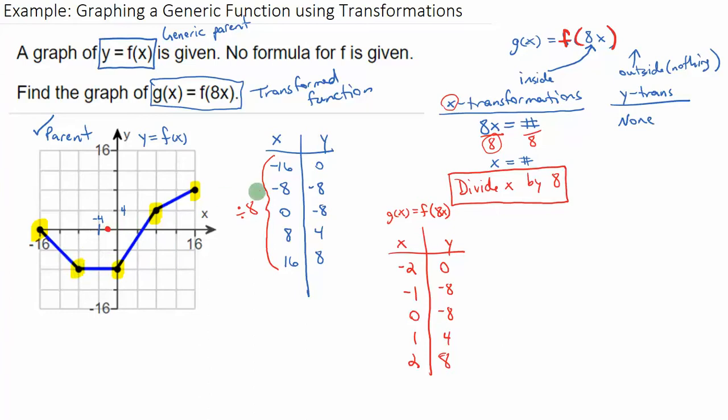This point down here, which was (-8, -8), becomes (-1, -8). So now that's down here. This point (0, -8), this guy right here stays at (0, -8). It doesn't change, so it's still right where it was. The point (8, 4), this guy over here, becomes the ordered pair (1, 4). So it's only right there. And finally, my last ordered pair (16, 8) becomes (2, 8). So that's way up here.